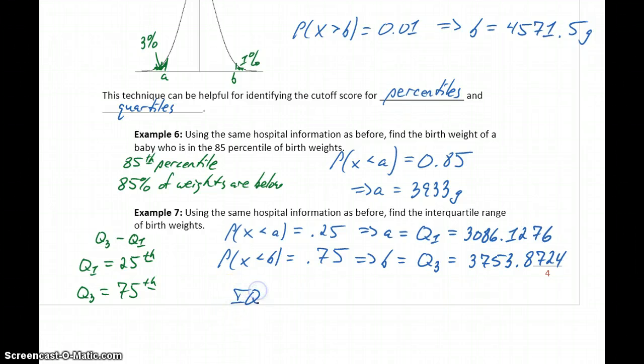So then we can find the IQR by again taking the difference of Q3 minus Q1, so subtracting these two numbers, gives us an interquartile range of 667.7448. So we were already given the standard deviation. We can also calculate the interquartile range by finding the first and third quartiles as an alternate measure of spread for this distribution.